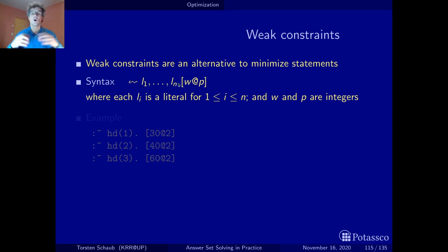Okay so instead of writing one minimize statement for instance with several of these guys inside here you have several weak constraints that you can write separately. In the same way, if you want to use weak constraints to express a maximize statement then you have to use negative weights.